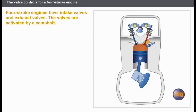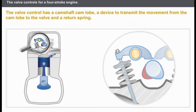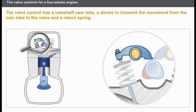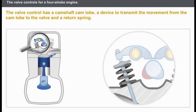Fourth stroke phase: the exhaust valves open to let out the exhaust gases. The valve controls always include the following components: a camshaft, a cam lobe, and a device that can usually be adjusted which transmits the movement of the cam lobe to the valve — in our example, it is a rocker arm.